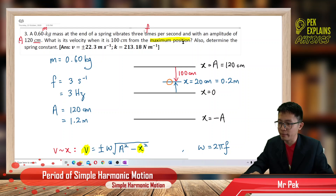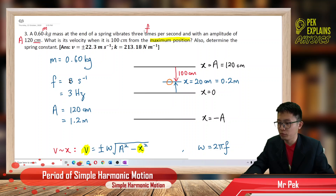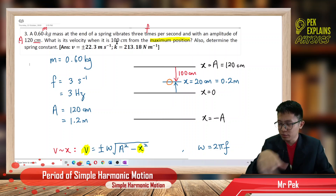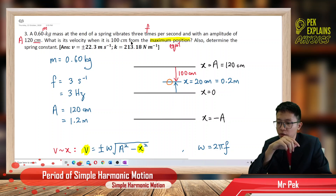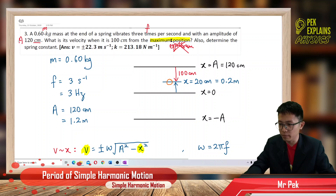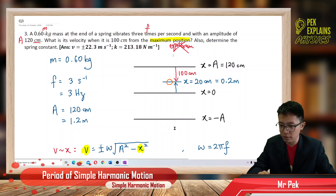What is the velocity when 100 cm from maximum? This is something we should take note — it is from the maximum position, not from the equilibrium position. Be careful. So we must determine where the displacement is first. Here, I draw it: this is the equilibrium, and this is the amplitude.